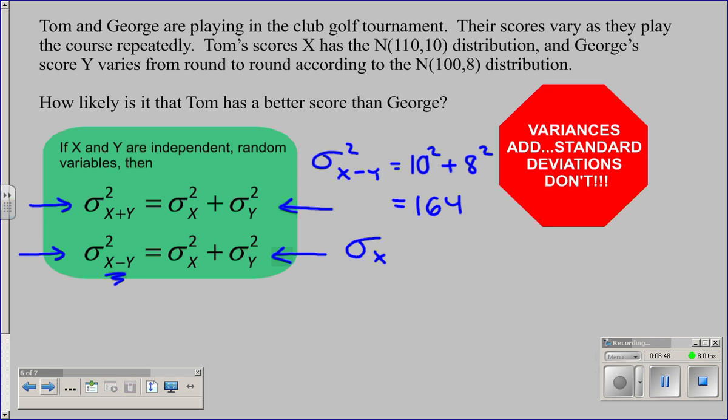Therefore, the standard deviation between Tom and George is the square root of 164, which is 12.8. And we're going to use that number in some calculations now. But variances add. If there's anything in this packet that you want to put stars around, it's this idea that variances add and standard deviations don't.